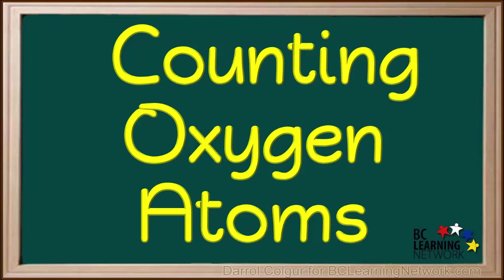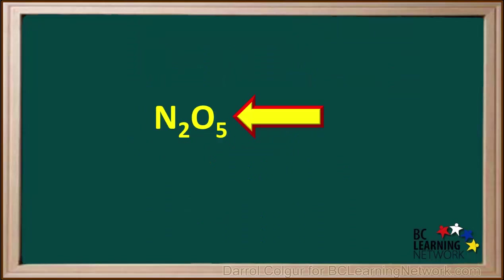Sometimes we're asked to count the total number of oxygen atoms represented by a formula for a compound. We'll show you how to do this with some examples. We'll start with a simple formula, N2O5.